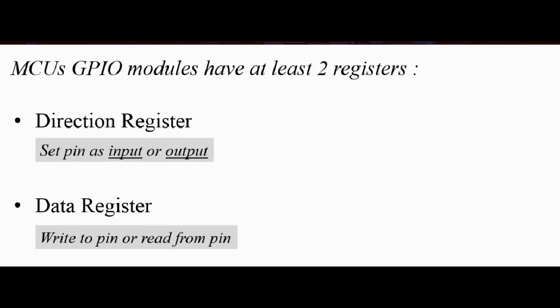Okay. Now, let's talk about the common registers in the GPIO module. This is just an overview of all GPIO modules, not just our ARM microcontroller GPIO modules. So any microcontroller at all, its general purpose input-output module would have at least two registers. One register is known as the direction register. This register is used to set that pin either as input or output. And the other register is known as the data register. This register is used to write to the pin or read from the pin.